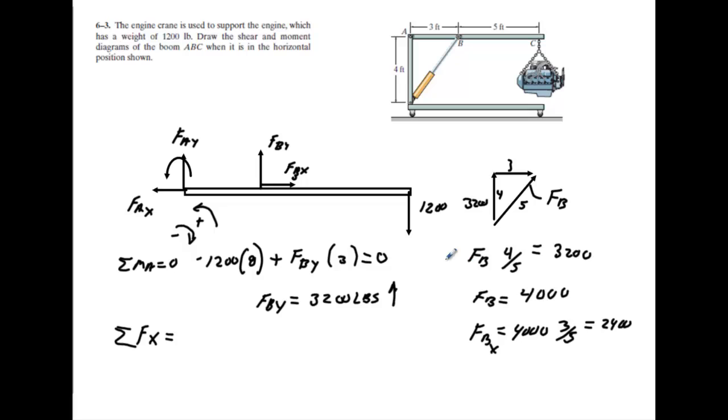Okay, so when we sum these then we can say F_B_X which would be 2,400 to the right plus F_A_X equals 0, and we find out very quickly that F_A_X would be 2,400 going to the left.